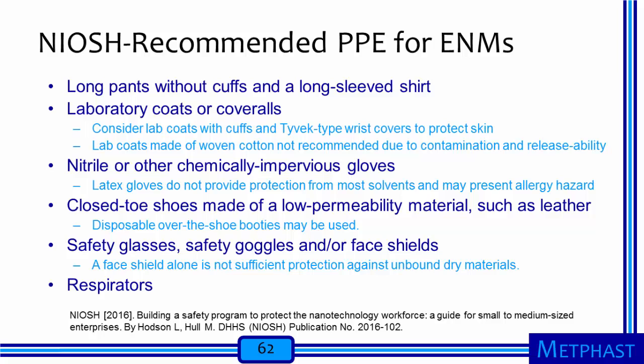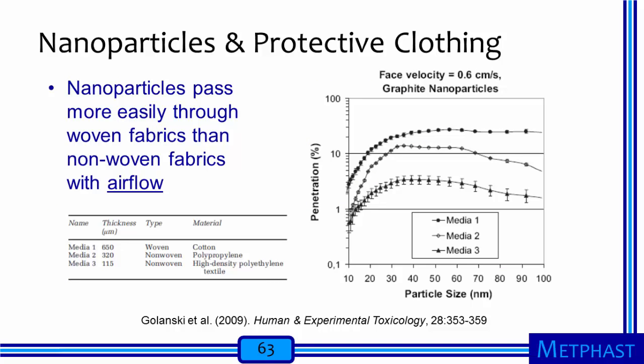NIOSH has published recommendations for PPE when working with engineered nanomaterials: long pants without cuffs and a long-sleeved shirt; a laboratory coat or coveralls, especially a lab coat with cuffs and Tyvek-type wrist covers to protect the skin and lab coats not made from woven cotton; nitrile or other chemically impervious gloves, but not latex gloves; closed-toe shoes made from a low-permeability material such as leather, or disposable over-the-shoe booties; safety glasses, goggles, or potentially a face shield, although a face shield alone does not protect against unbound nanoparticles; and finally, a respirator. This is the assembly of PPE recommended by NIOSH for those working with engineered nanomaterials.